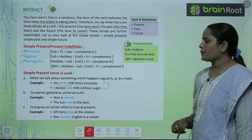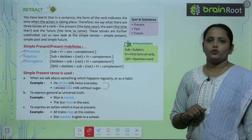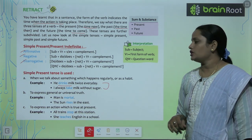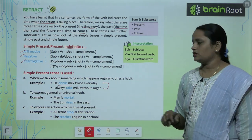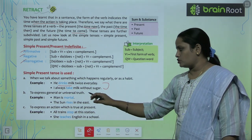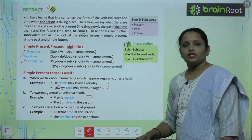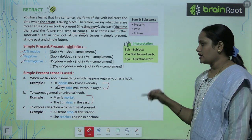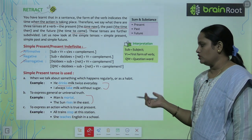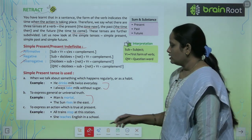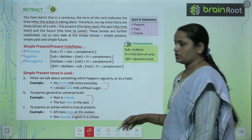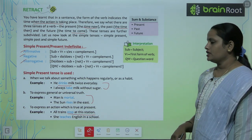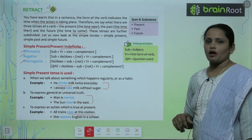The second use is to express general or universal truth. For example: 'Man is mortal' and 'The sun rises in the east.' The third use is to express an action which is true at present. For example: 'The train stops at its station' and 'She teaches English in a school' — these are present truths.